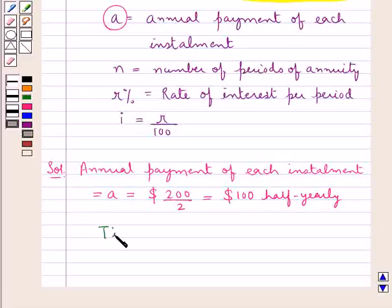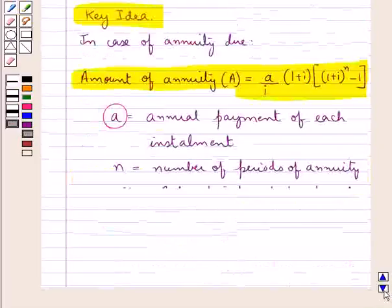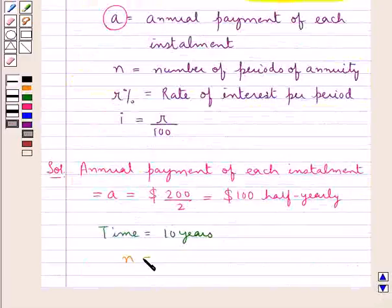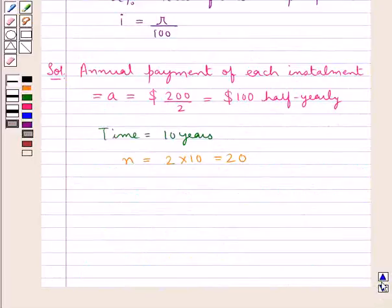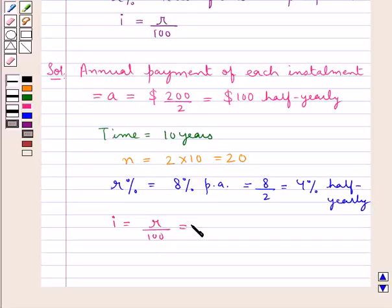Now, time is 10 years. Since the payment is done half yearly, N, the number of periods of annuity, equals 2 into 10, which is 20. The rate of interest is 8% per annum, divided by 2, giving 4% half yearly. Therefore i = r / 100 = 4 / 100 = 0.04.